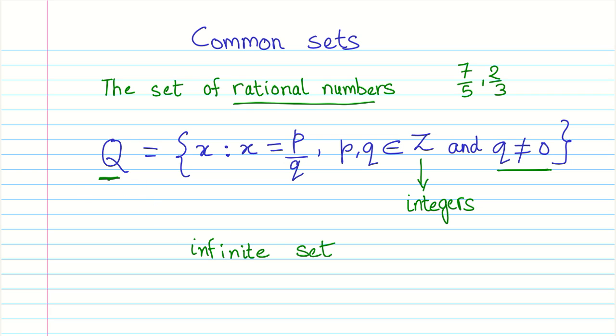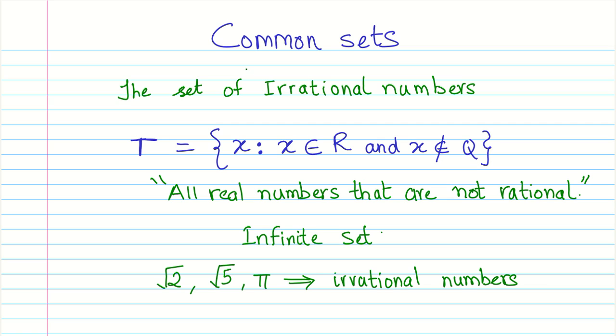Let us look at the next common set: the irrational numbers. What are the irrational numbers? The numbers that are not rational. We use the letter T to represent irrational numbers, comprised of all elements X where X belongs to real numbers and X does not belong to Q.